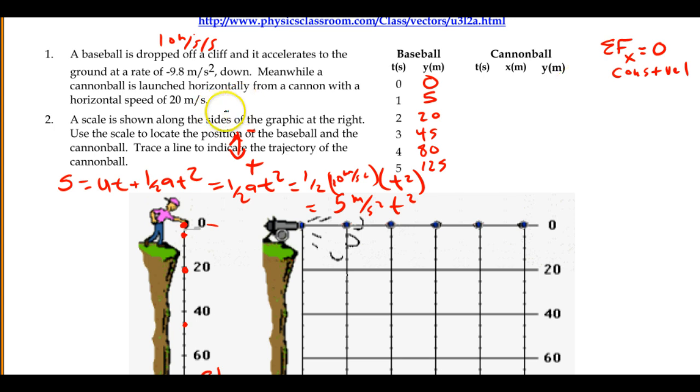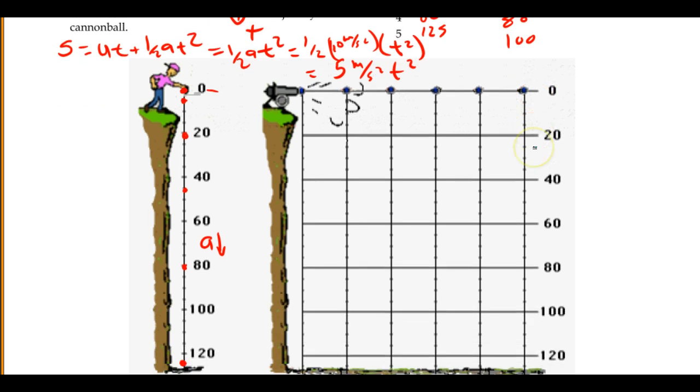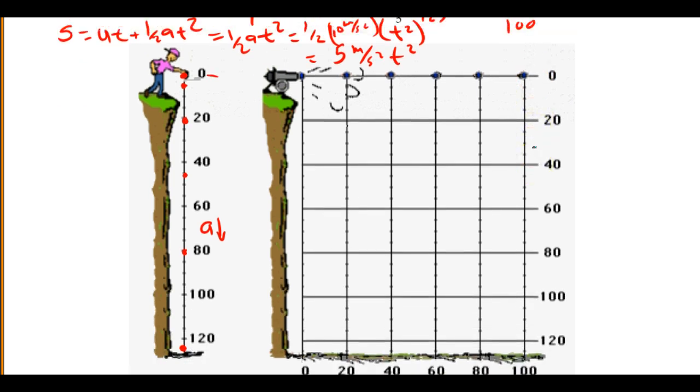We're shooting this horizontally at 20 meters per second. That means at 0, it starts at the 0 point. But then 1 second later, it will have moved 20, and then 40, and then 60, and then 80, and then 100. They, in fact, have actually marked out those positions for us.